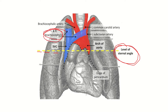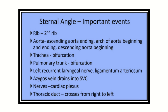This point is very important: brachycephalic — 'brachio' meaning the limbs and 'cephalic' meaning the head — so the brachycephalic vein is the vessel which supplies the upper limbs and the head and neck area. It will not be located at the level of the external angle.